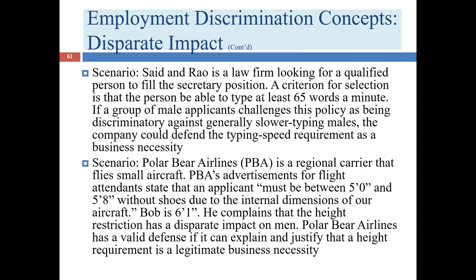Consider this: a law firm wants to hire someone who types at least 65 words a minute. Let's say generally males type slower than females. A group of male applicants challenges this requirement, arguing it has a disparate impact on males who want to work as secretaries. The law firm would probably be able to prove that fast typing is very reasonable for secretaries. But if instead the opening were for a courier — someone who runs papers as a messenger — you probably don't need to type at all to be a messenger, and in that case the male applicants would have a good disparate impact argument.